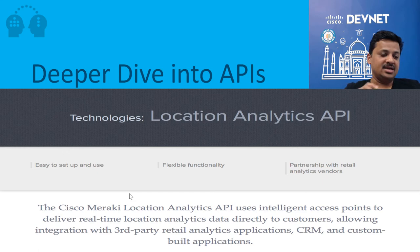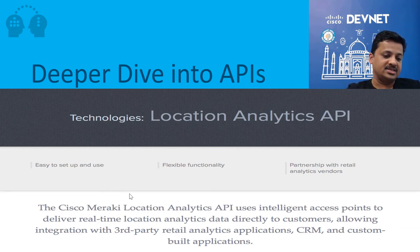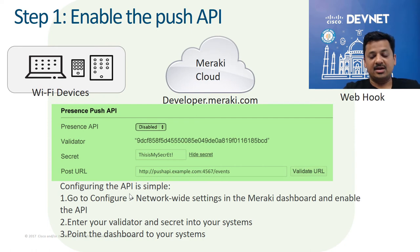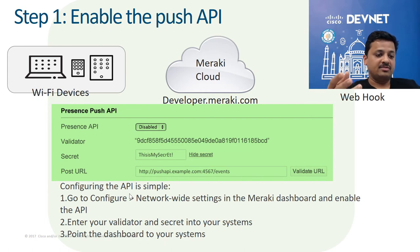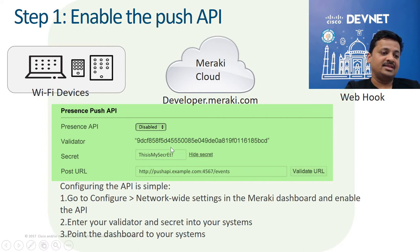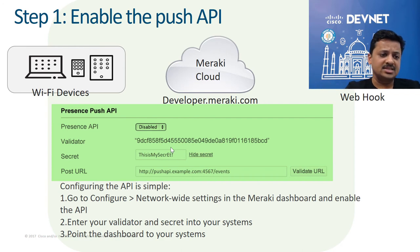Now let's do a deep dive into the location analytics API, or scanning API. In order to enable that, there are three steps. The first step is to log in to developer.meraki.com and enable push APIs — meaning you want to scan and push device information down to you. There is also something called a validator key, and this validator key is important because that's how the security of the application is maintained.